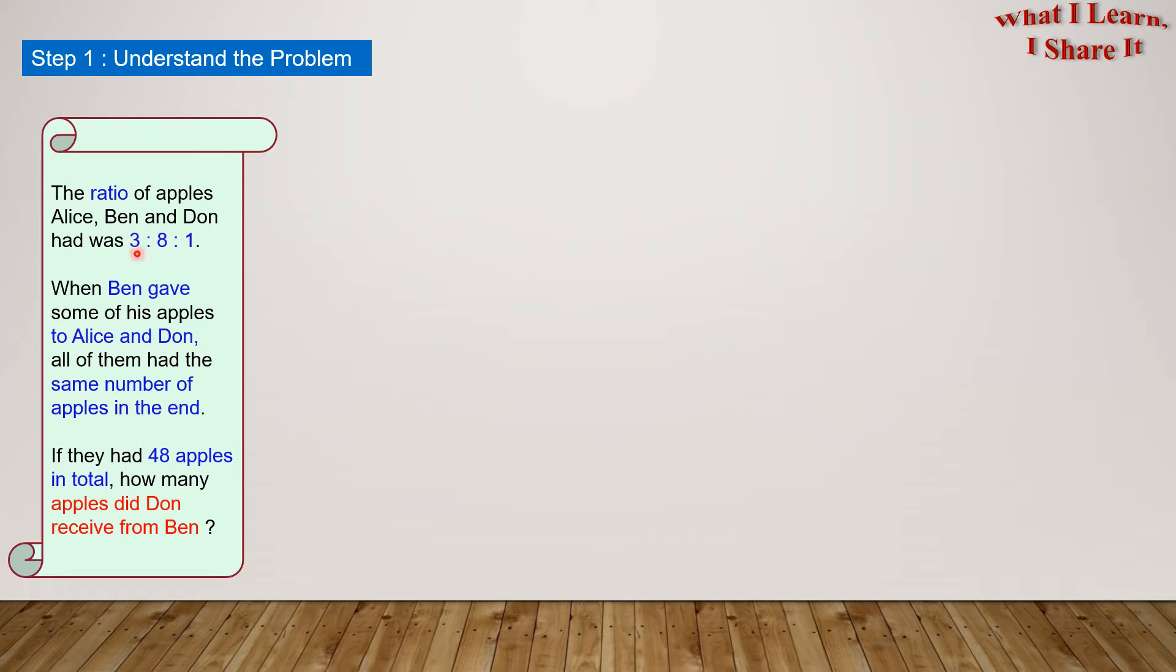In this problem, since we have to deal with Alice's apples, Ben's apples, and Don's apples, it will become easier if we choose some letters to represent them. Let's represent Alice's apples by A, Ben's apples by B, and Don's apples by D.